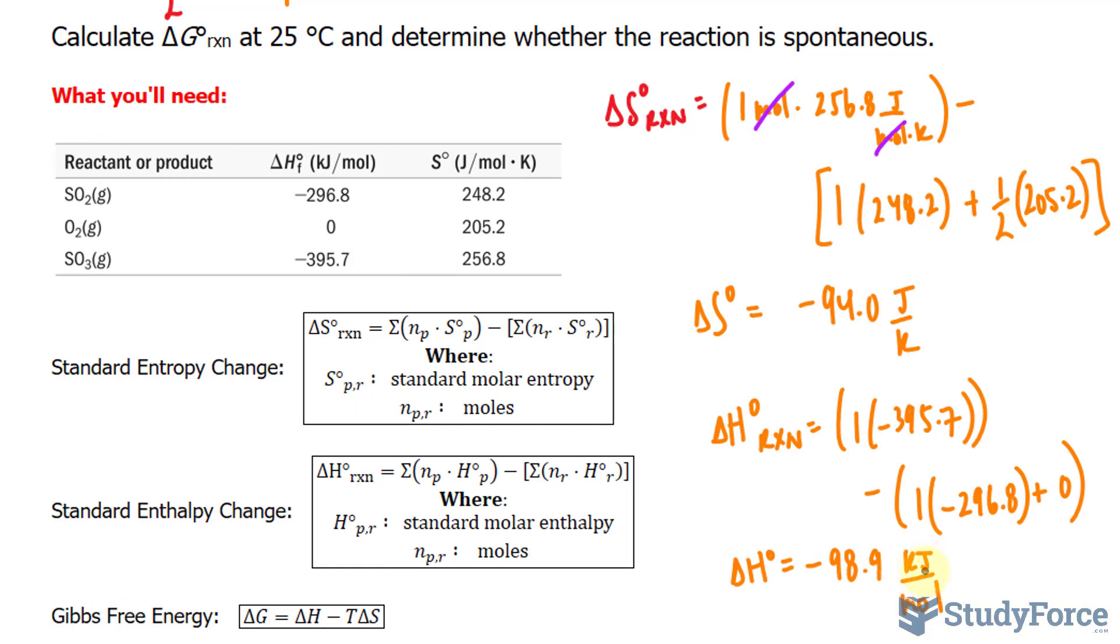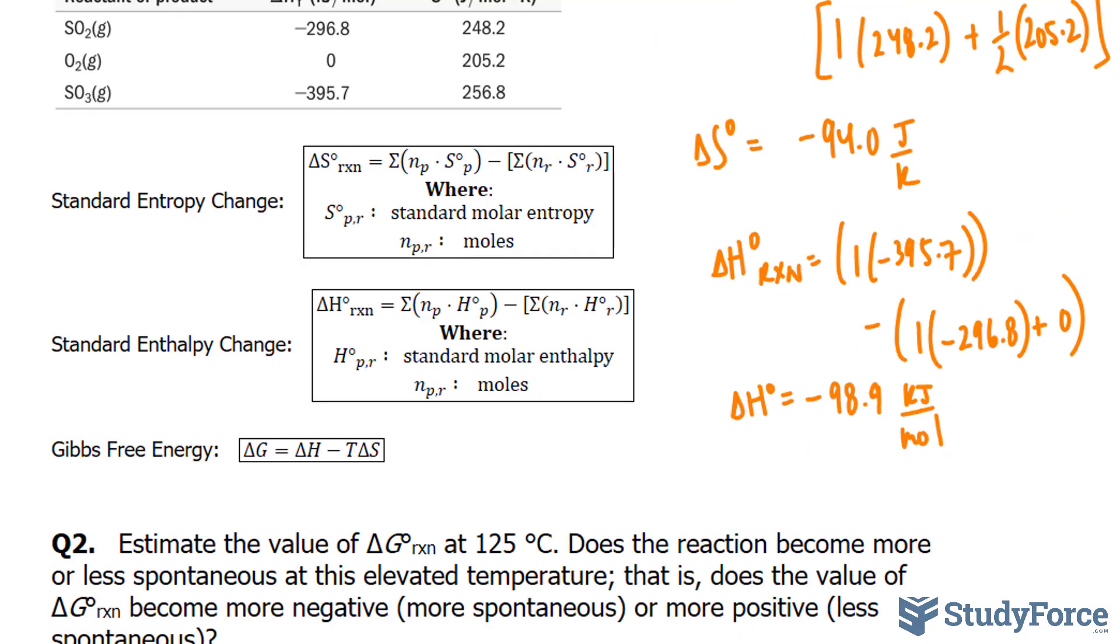There's a discrepancy in the units. This one is in joules, this one is in kilojoules. You have to decide whether you want kilojoules or joules. So I'll change this into joules by multiplying it by 1,000. If I multiply this by 1,000, I end up with negative 98,900 joules per mole.